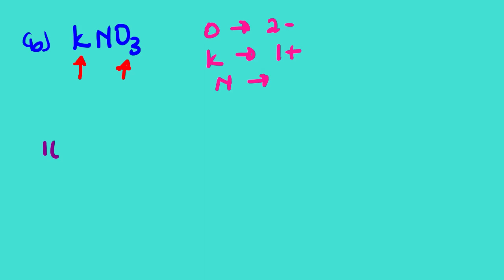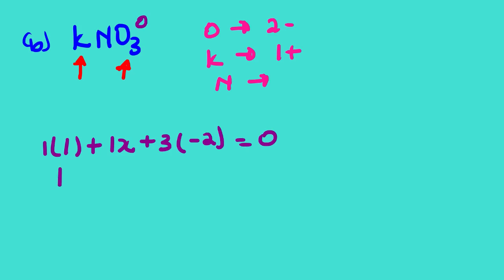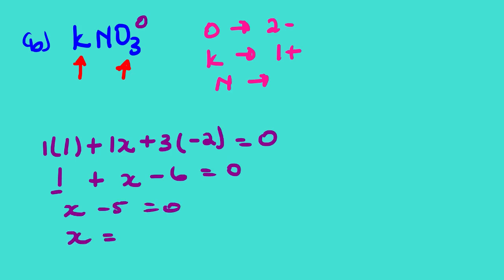Working out: 1 + x + 3(−2) = 0 → 1 + x − 6 = 0 → x − 5 = 0 → x = 5+. The oxidation number of nitrogen in KNO₃ is 5+.